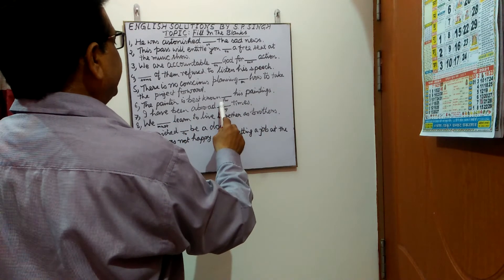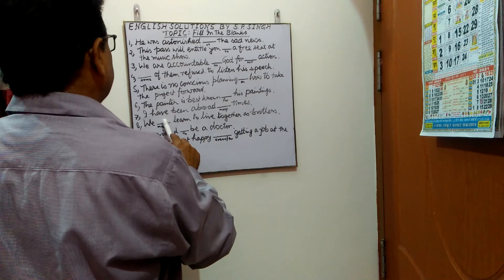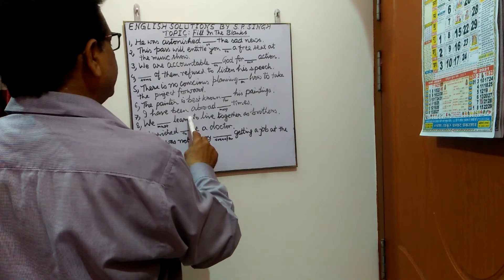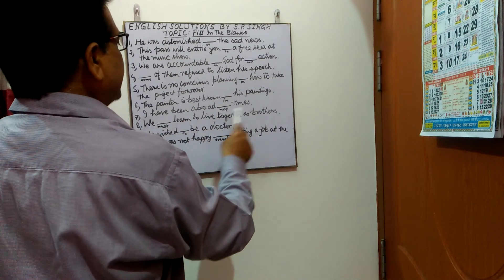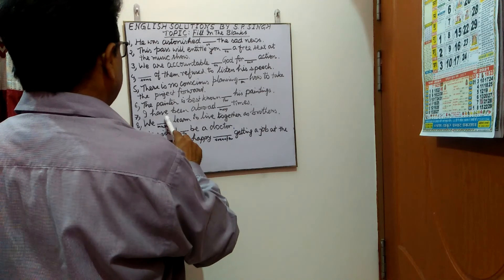Next sentence: 'I have been abroad ___ times.' You can put 'many times'. Next: 'We ___ learn to live together as brothers.' In the blank you have to put 'must'.